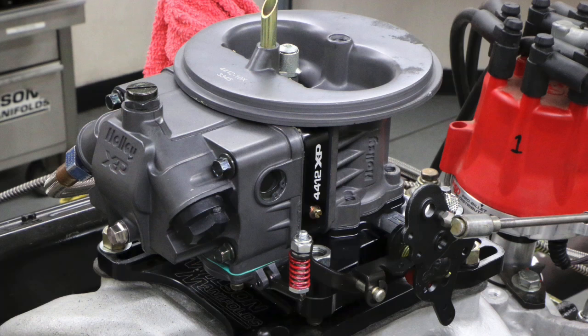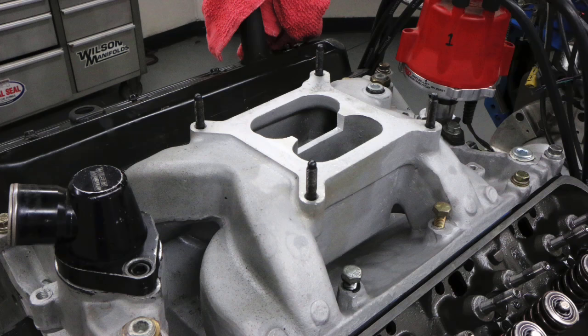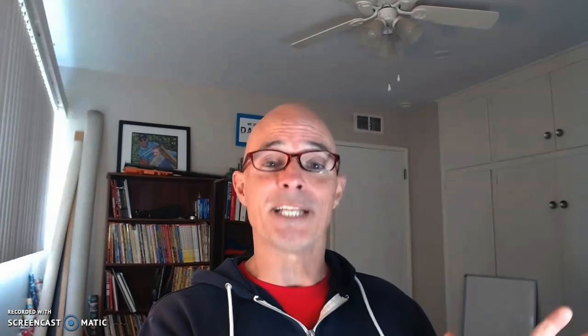We also have two different intake manifolds. One test was run on a single plane intake, one test was run on a dual plane intake. In addition to that, we also have a cool header comparison. We ran a set of inch and five-eighths chassis specific headers, in this case for a race car, a dirt track race car.